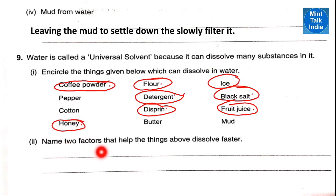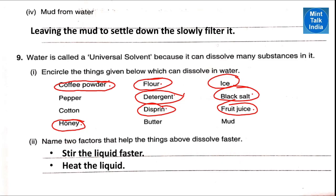Name two factors that help things dissolve faster. To dissolve anything faster, we can stir the liquid very fast, or powder the solid substance, and we can also heat the liquid to dissolve things faster in it.